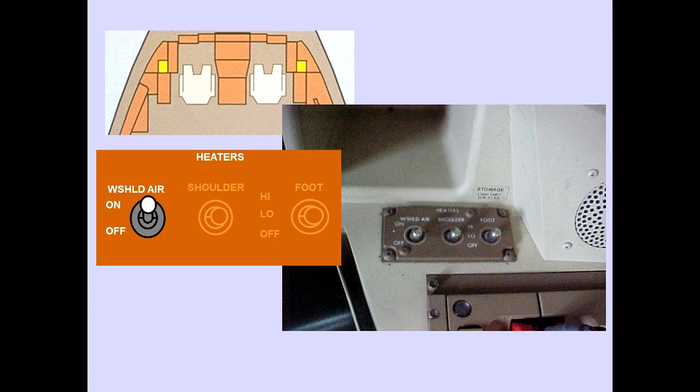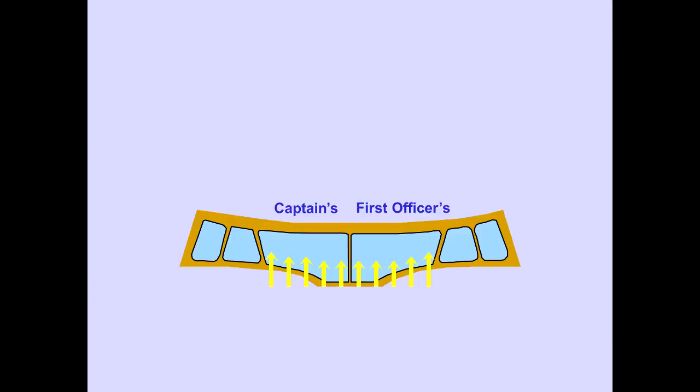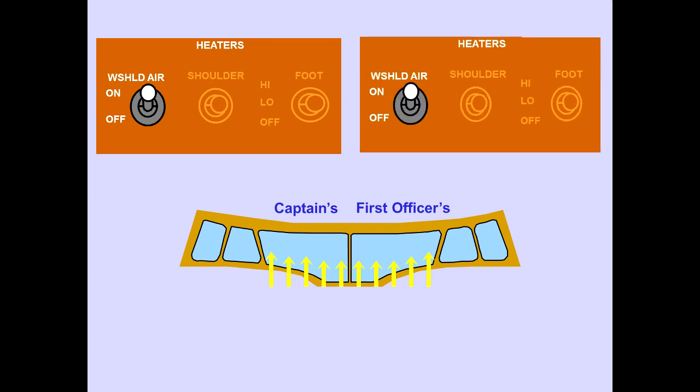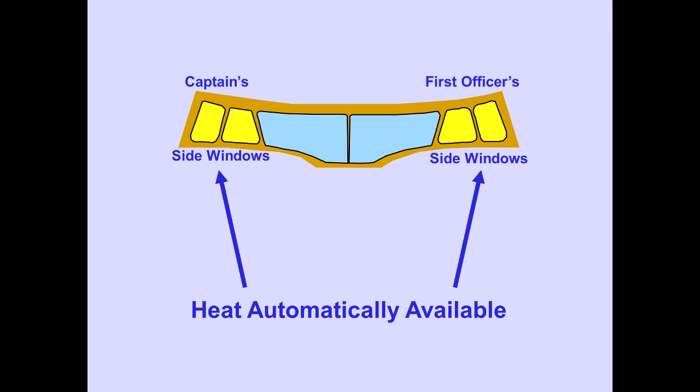Windshield air switches are located on the captain's and first officer's auxiliary panels. Positioning the captain's or first officer's windshield air switch to on provides conditioned air for defogging the respective windshield. Heat for defogging the captain's and first officer's side windows is automatically available whenever electrical power is on the airplane.